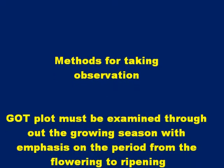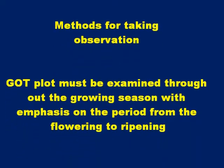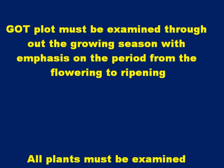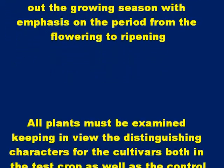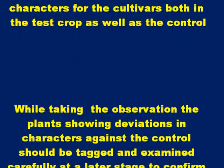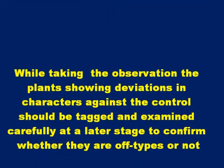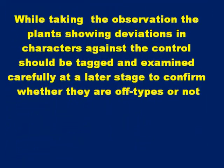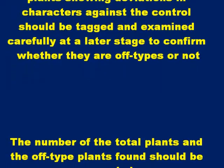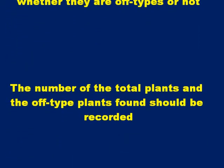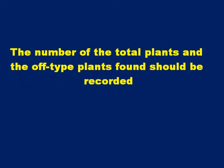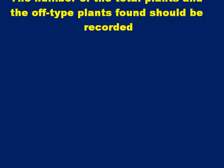Method for taking observation: the growth plot must be examined throughout the growing season, with emphasis on the period from flowering to ripening. All plants must be examined keeping in view the distinction characters for the cultivar, both in the test crop as well as the control. While taking the observation, plants showing deviation in characters against the control should be tagged and examined carefully at a later stage to confirm whether they are off-type or not. The number of total plants and off-type plants found should be recorded.